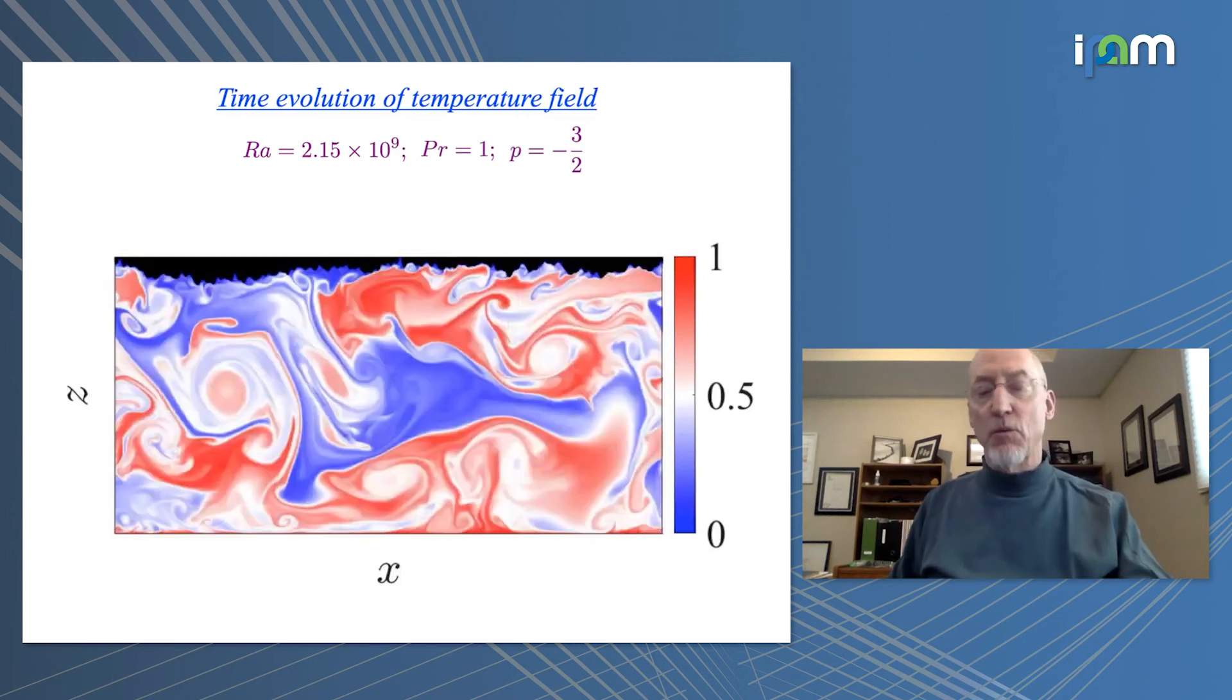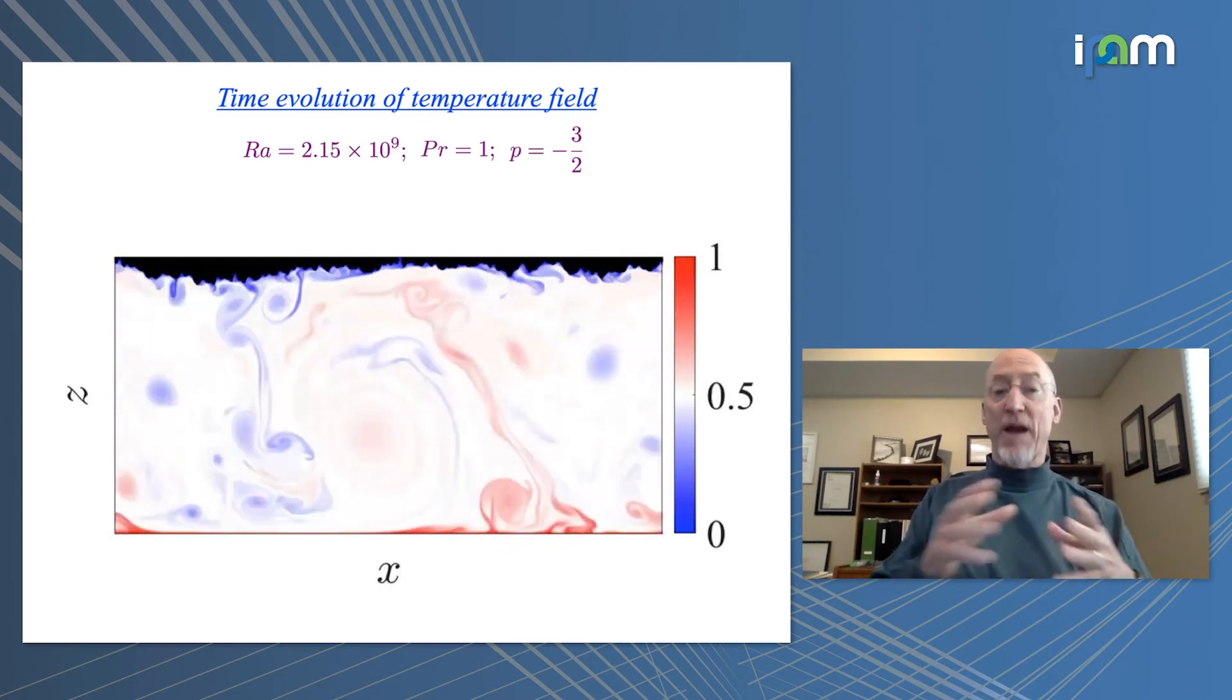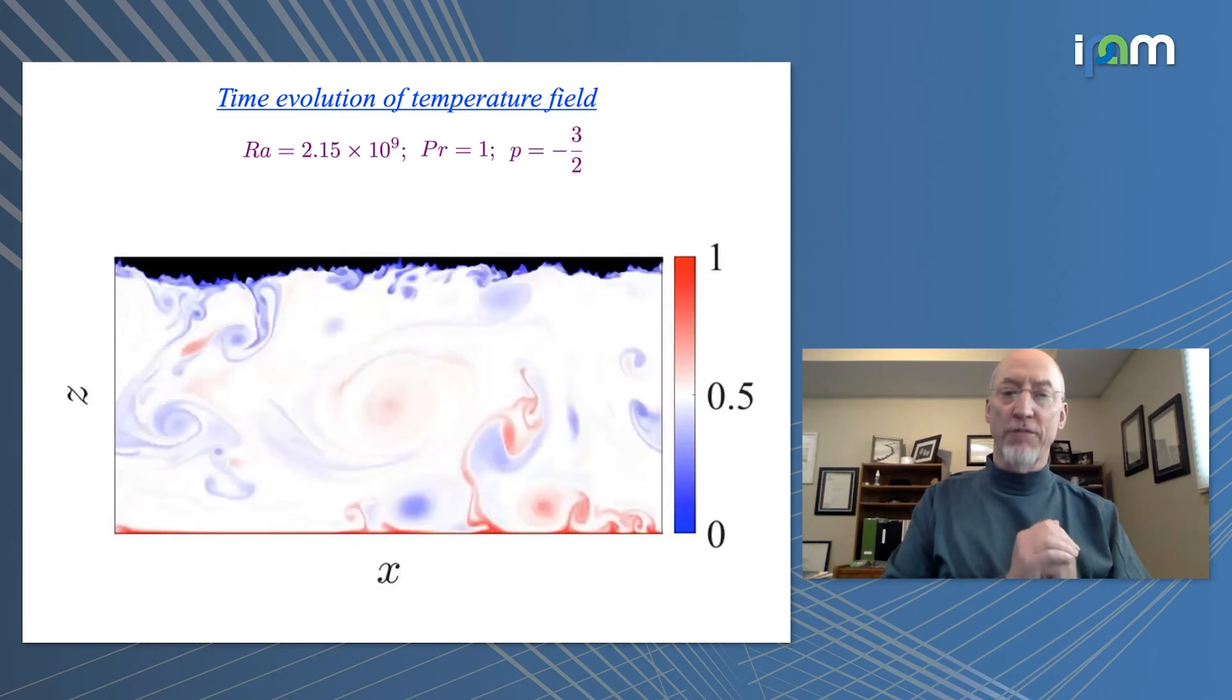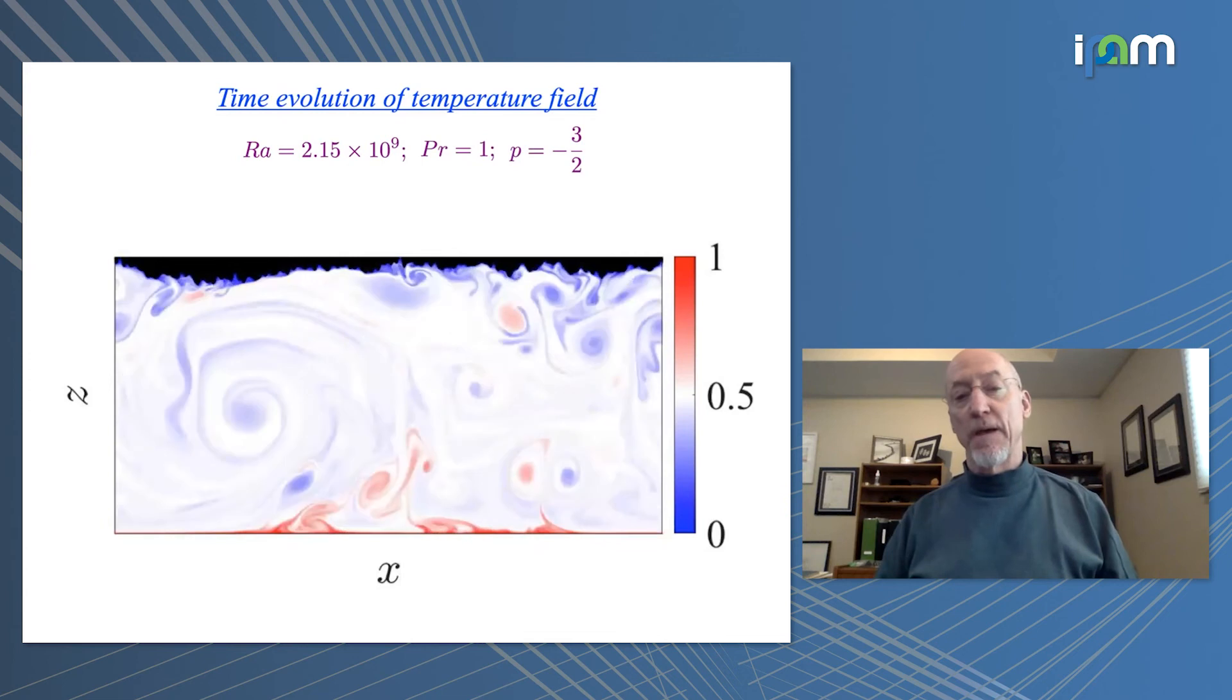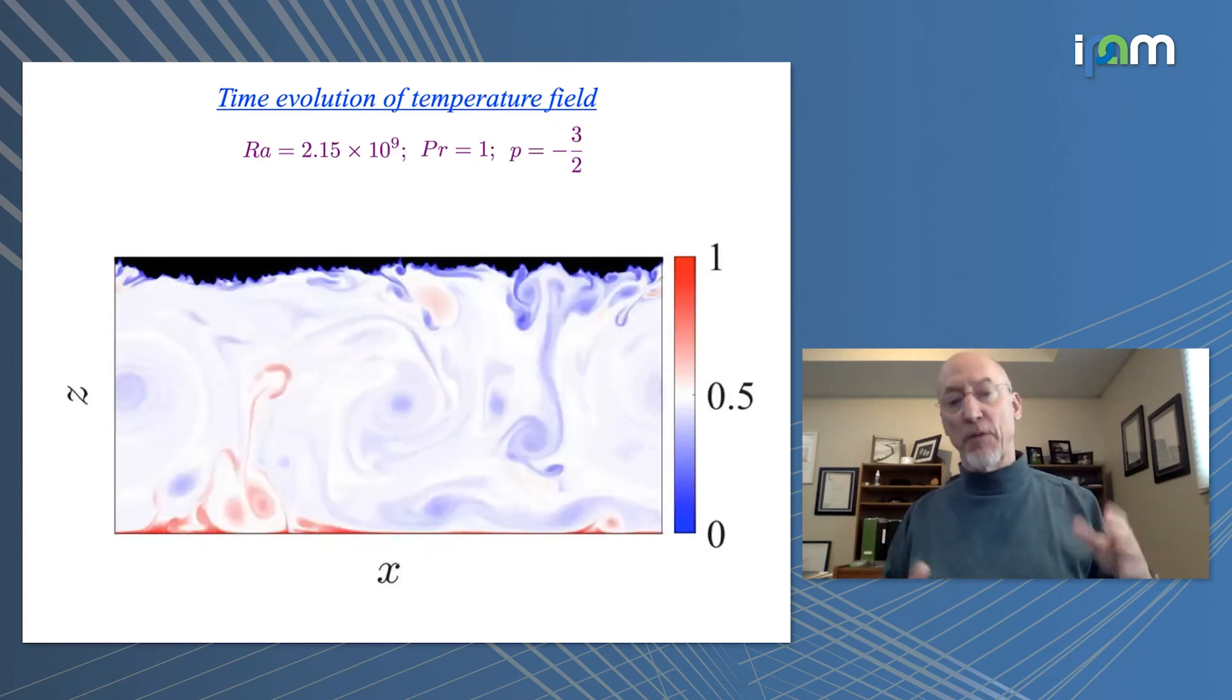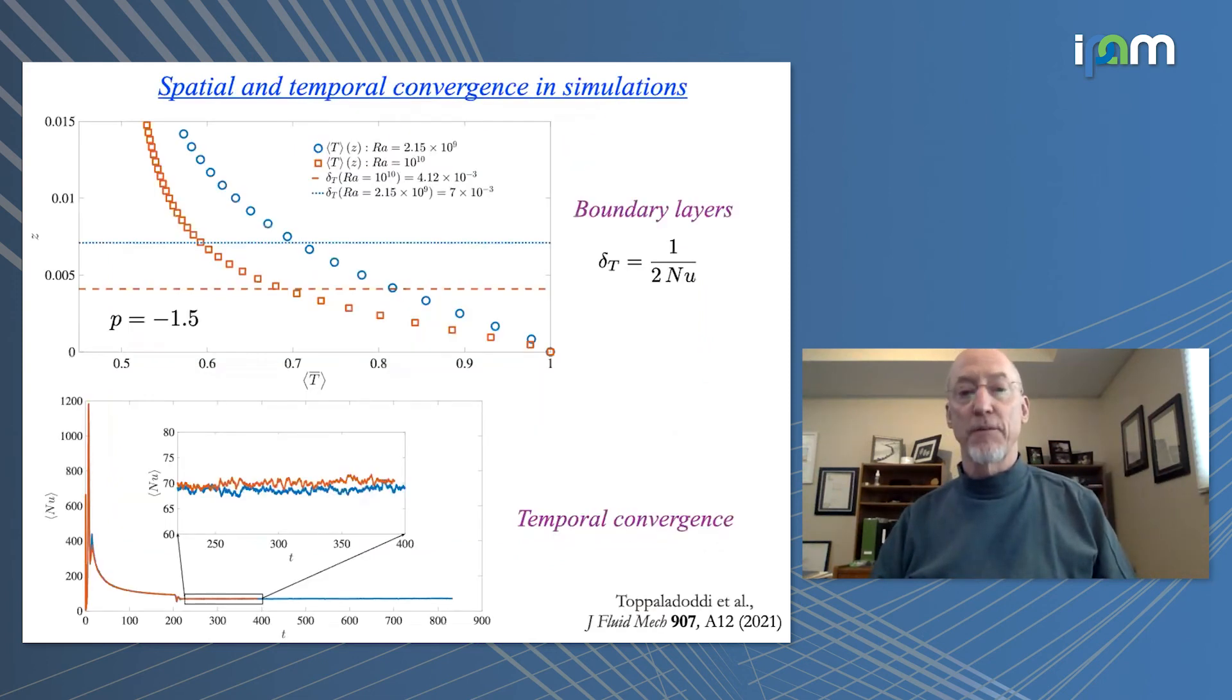So again, what one sees is that there are plumes generated from roughness elements, but because there is a spectrum of length scales on the upper surface, not all of those roughness elements are participating in injecting, in this case, negative buoyancy into the interior. And so that's the idea that we had in undertaking the studies. As we increase the Rayleigh number, there will be smaller and smaller boundary layer thicknesses, and therefore there will be different amounts of participation of the upper surface on the interior.